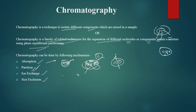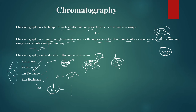In ion exchange, certain ions in the components and mixture interact based on their charge. In size exclusion, the components in the sample differ in size, and a third medium separates them based on size differences. This is a basic introduction. Remember the names of these mechanisms — this is important.